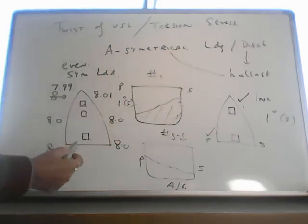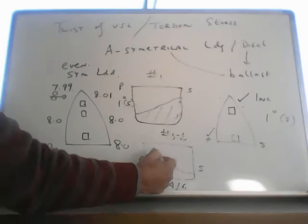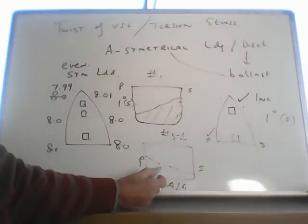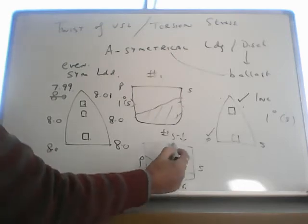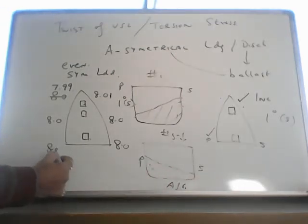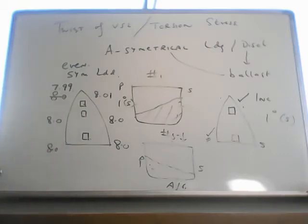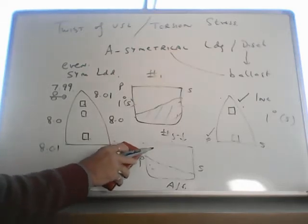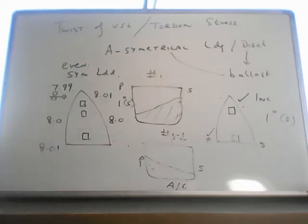To correct this list in hatch 5, which was evenly loaded, now you load more on the port, you shift some cargo from starboard to port in hatch 5. It becomes like this. And this earlier draft becomes something like 8.01 and 7.99.